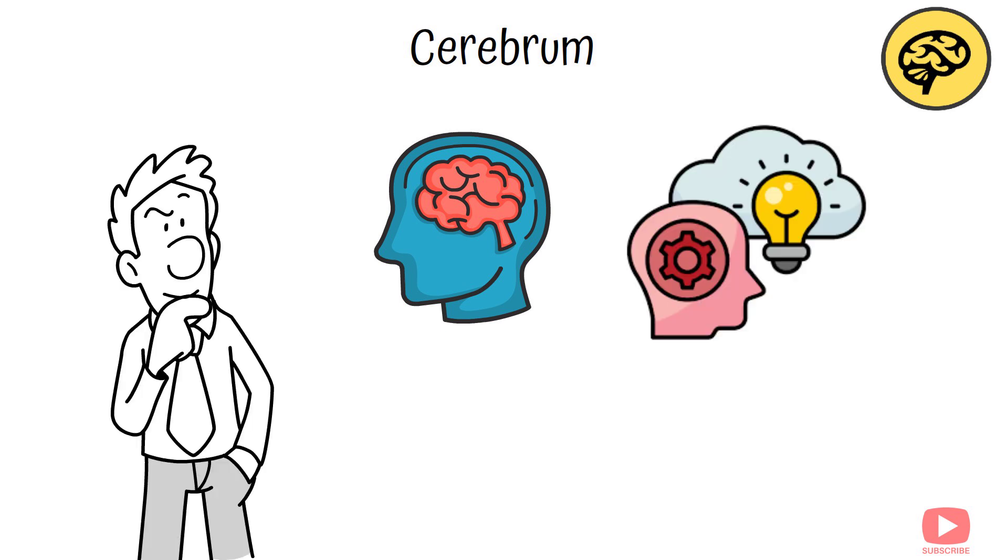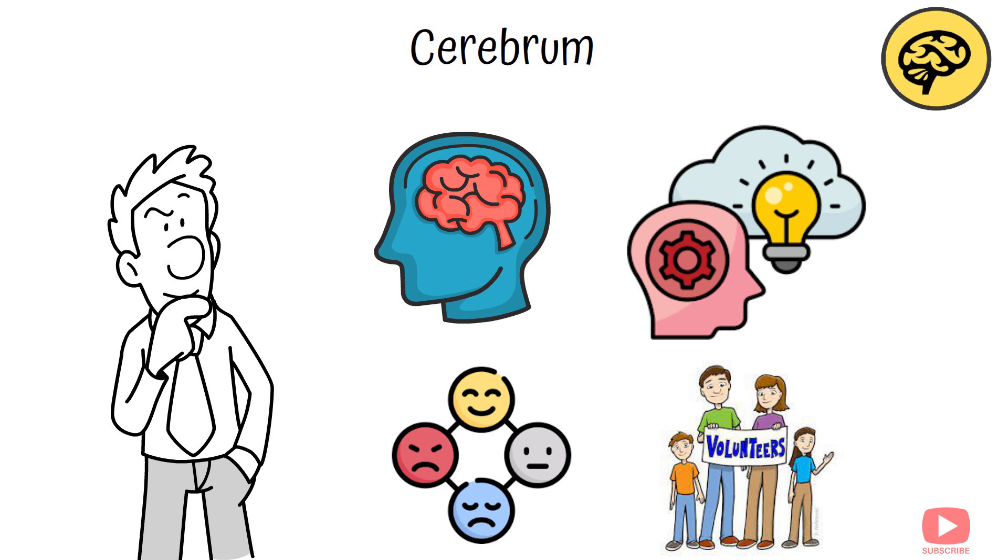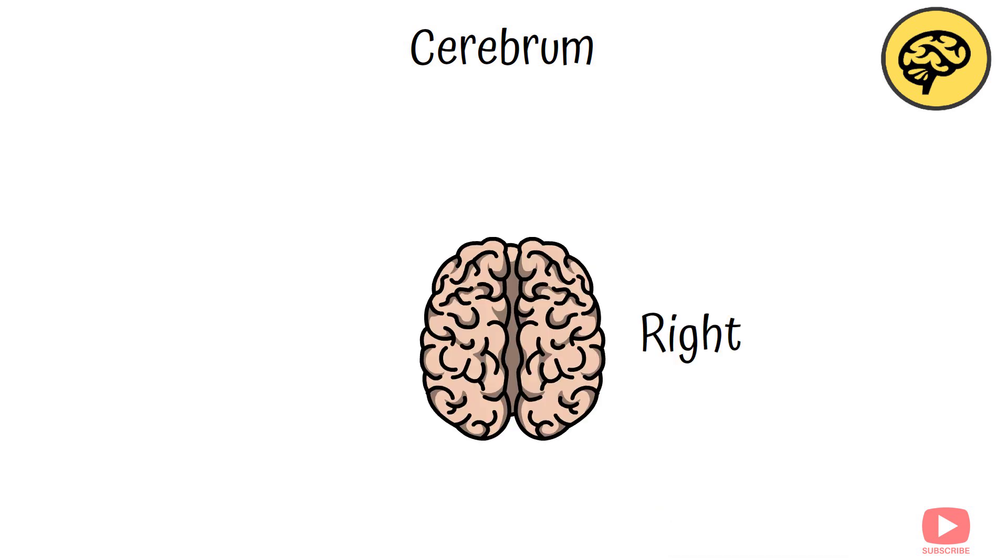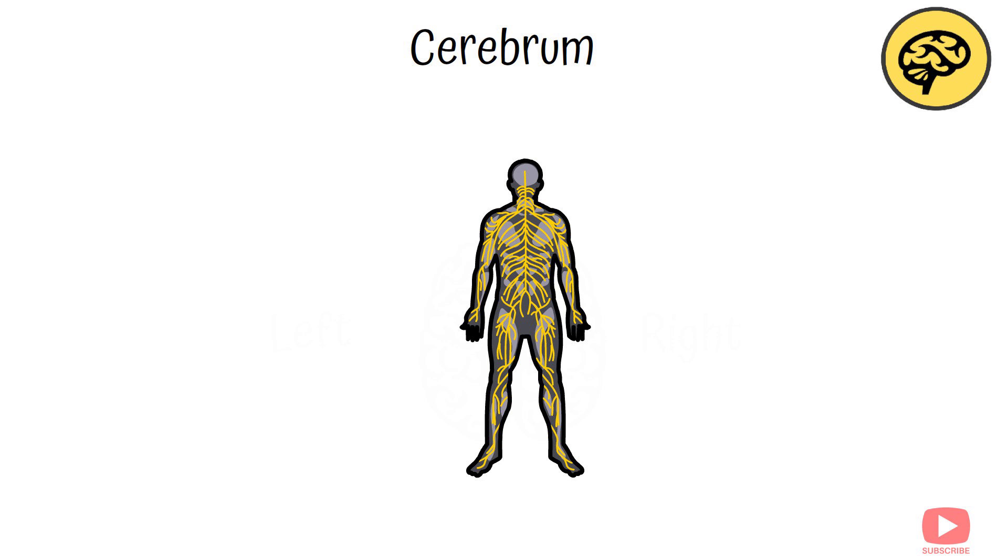Cerebrum. The cerebrum is the largest part of the brain, responsible for higher brain functions like thinking, reasoning, emotions, and voluntary movements. It's divided into two hemispheres, the right and left, which control opposite sides of the body.